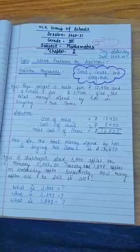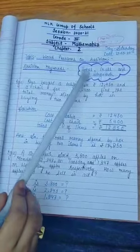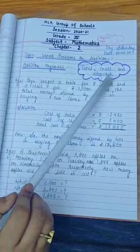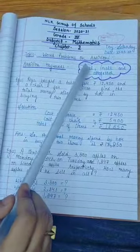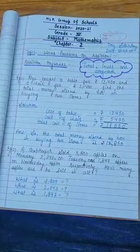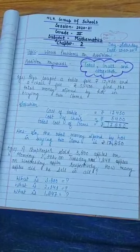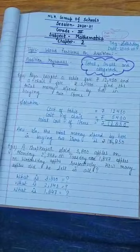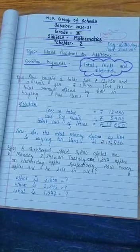Children, the addition keywords are total, in all, and all together. By these keywords, you can easily understand that the question is about addition. Let's take an example.